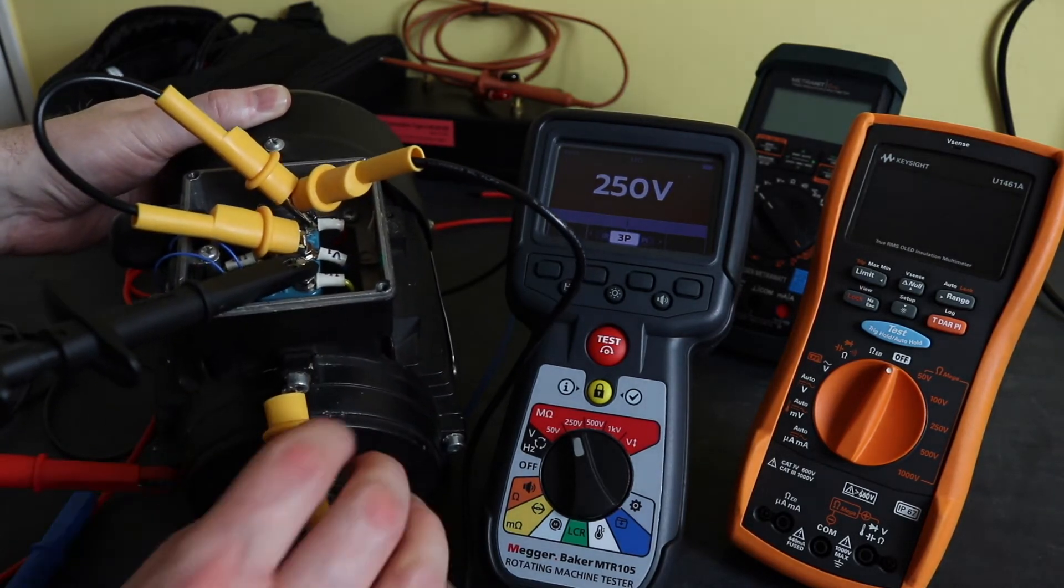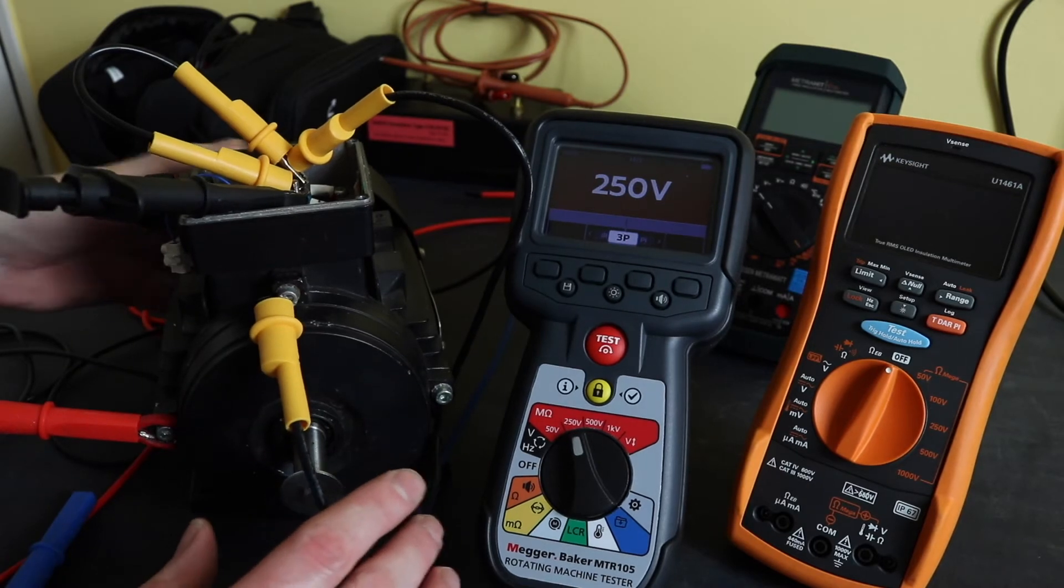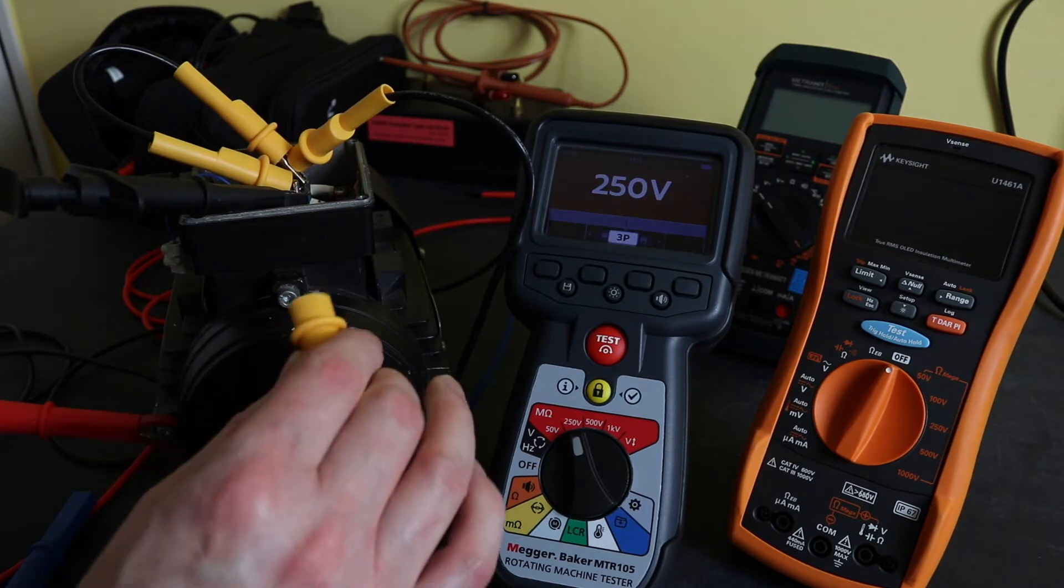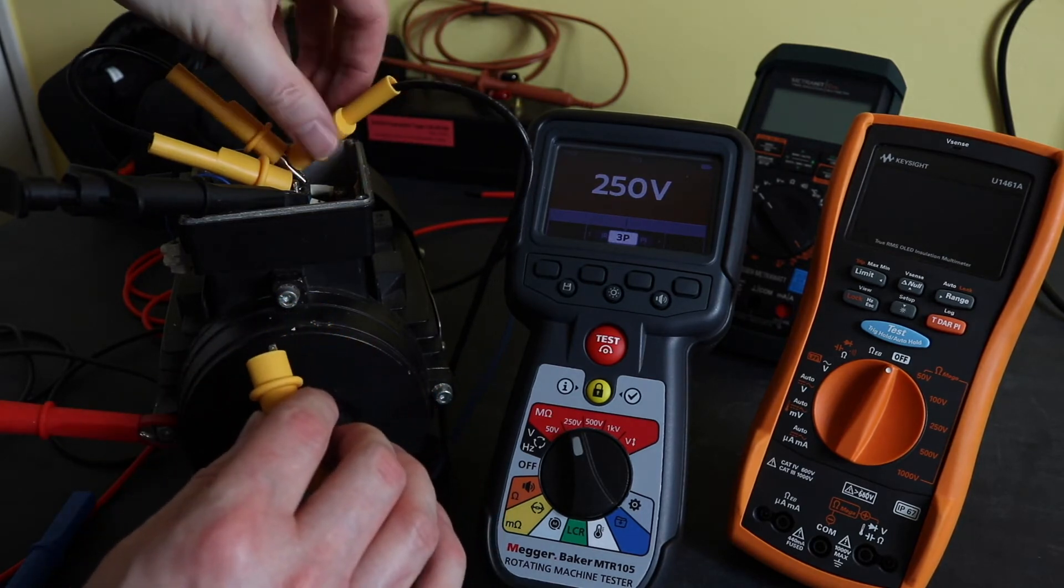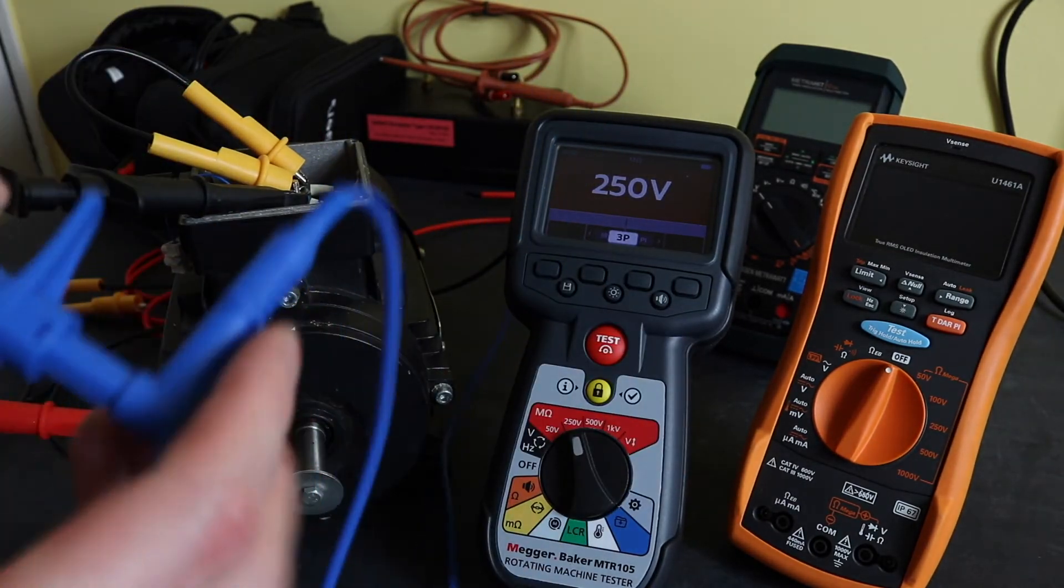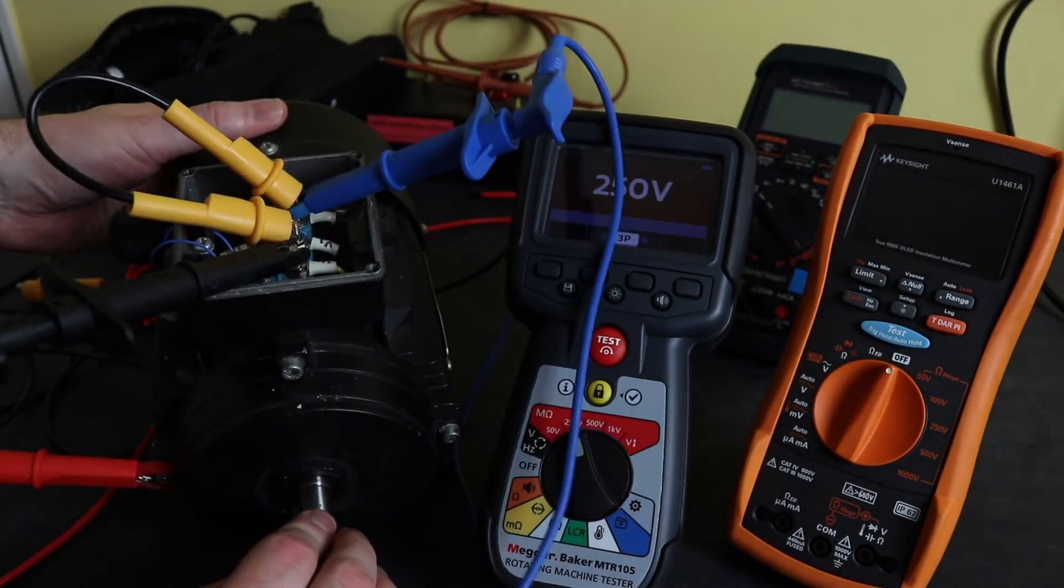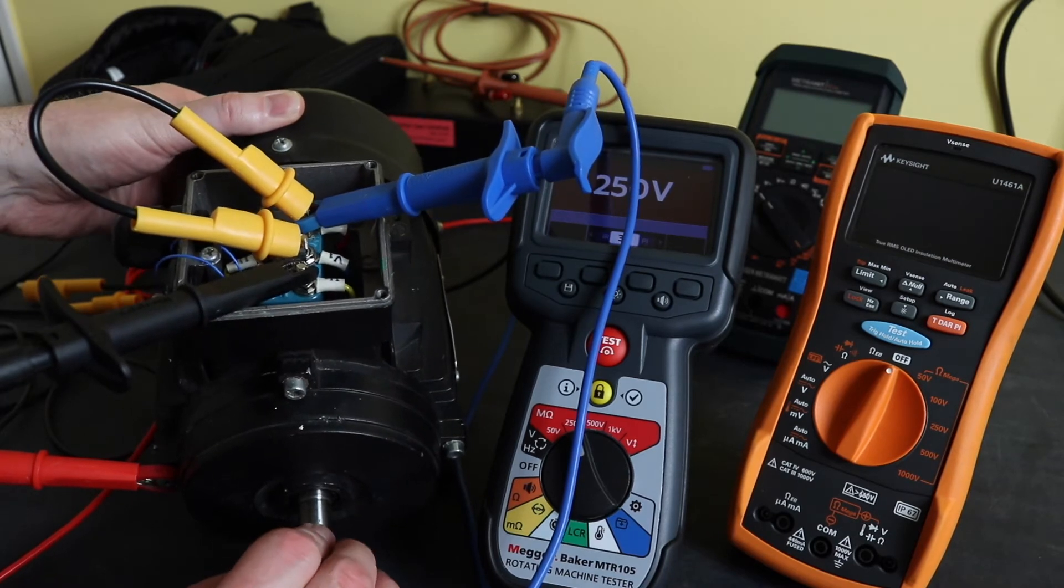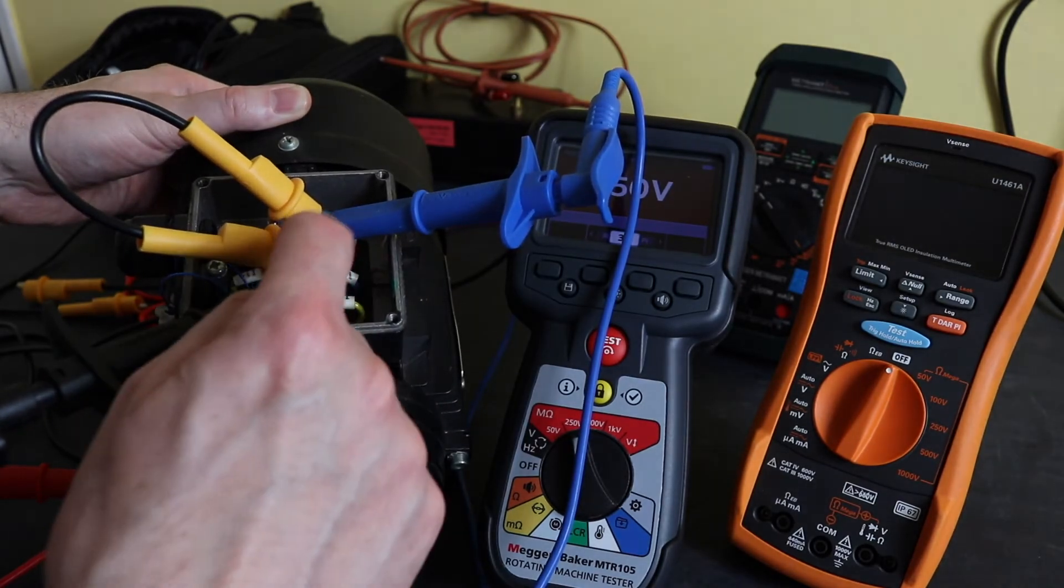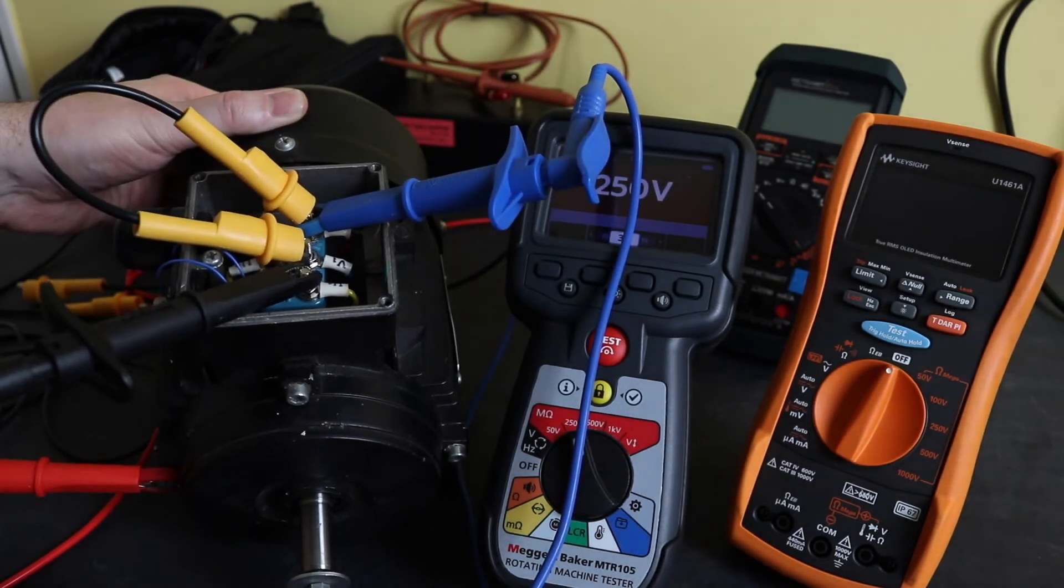A slight alternative to that would be to use the guard terminal, which this MTR-105 has, and has actually another unique feature of it. So to use that, I would remove this link that takes the two windings to Earth, and I would connect the guard terminal onto the two windings that are not under direct test. And that way, I would then get a true reading of this winding just to Earth, as any leakage into the other two windings will be taken away via this guard terminal on the insulation tester.